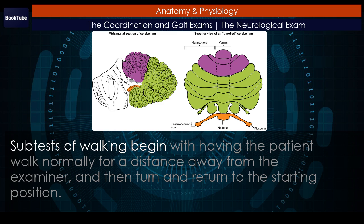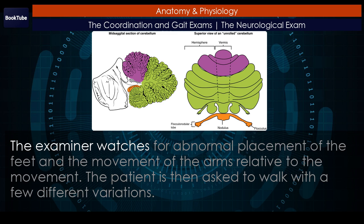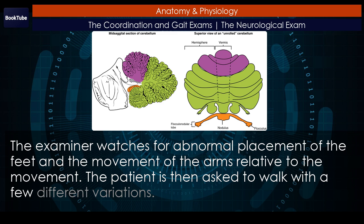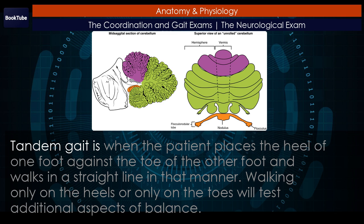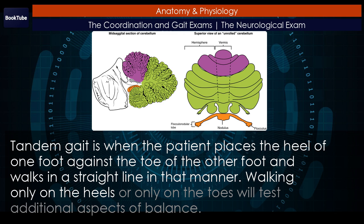Subtests of walking begin with having the patient walk normally for a distance away from the examiner, and then turn and return to the starting position. The examiner watches for abnormal placement of the feet and the movement of the arms relative to the movement. The patient is then asked to walk with a few different variations. Tandem gait is when the patient places the heel of one foot against the toe of the other and walks in a straight line in that manner. Walking only on the heels or only on the toes will test additional aspects of balance.